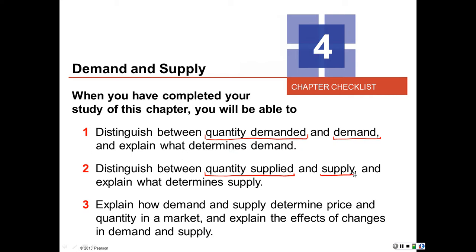We will look at the determinants of each of these. And lastly, we shall look at how the interaction of Demand and Supply determines price — in other words, how prices are determined in what are called competitive markets. We will see how the interaction of Demand and Supply determines price in such markets.